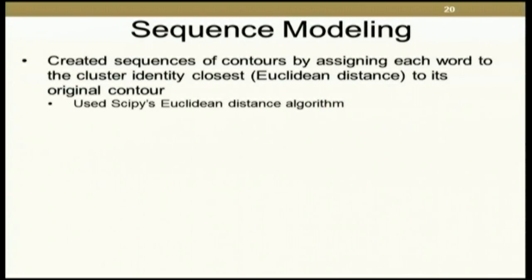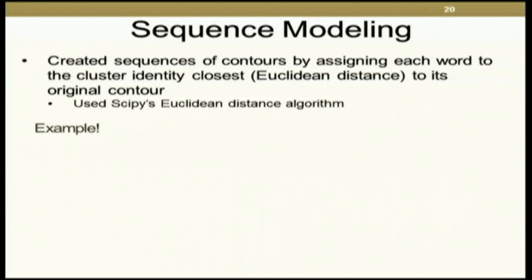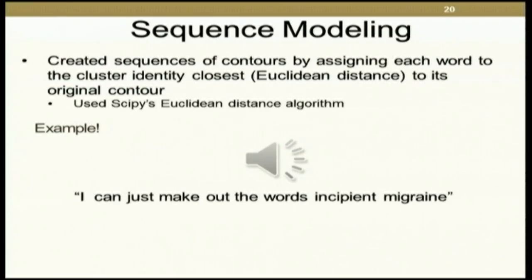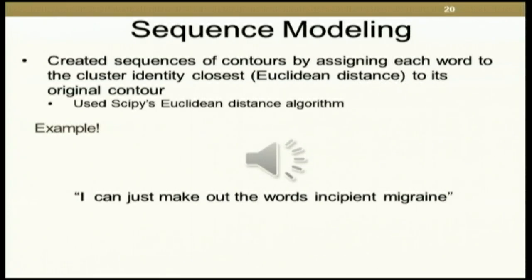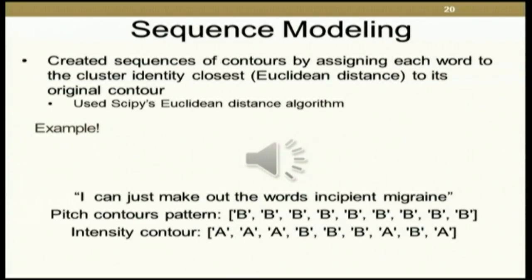We then looked at sequence modeling. We created sequences of contours by assigning each word to the cluster identity it was closest to, using SciPy's Euclidean distance algorithm. For example, with the sentence "I can just make out the words incipient migraine," the pitch pattern doesn't vary a lot - it's all mapped to pitch curve B - but the intensity contours shift between A and B.